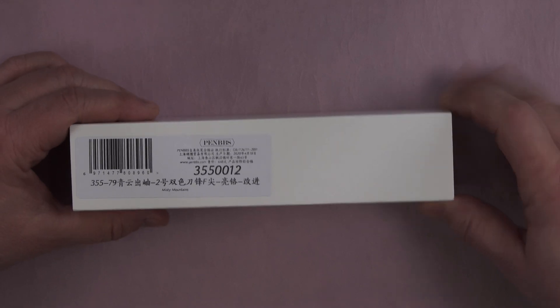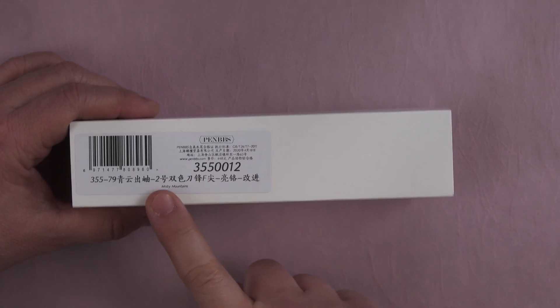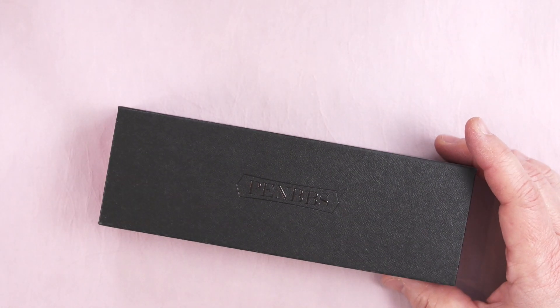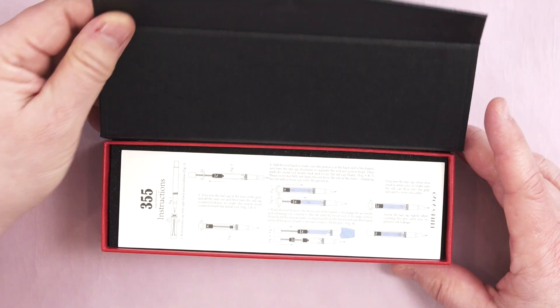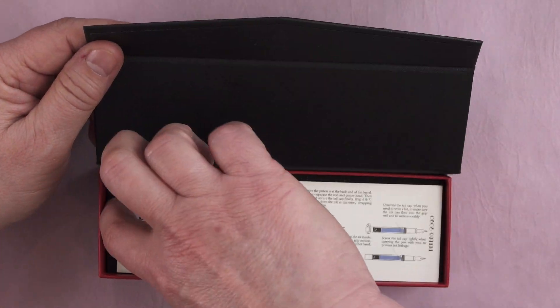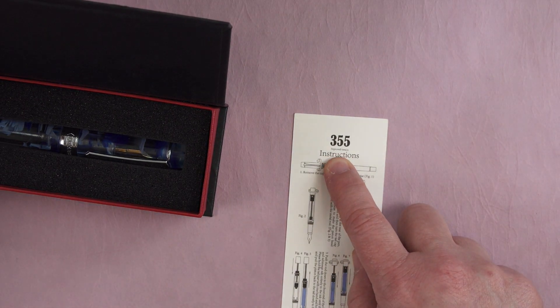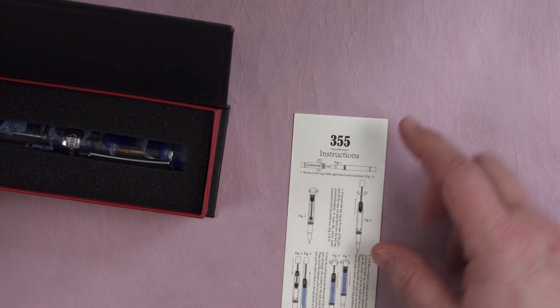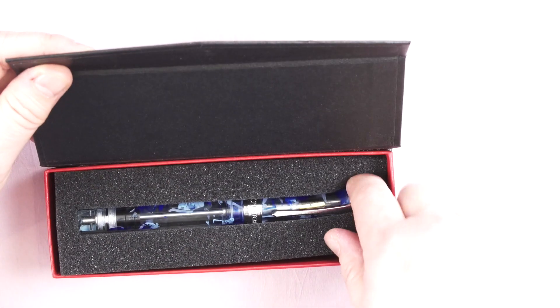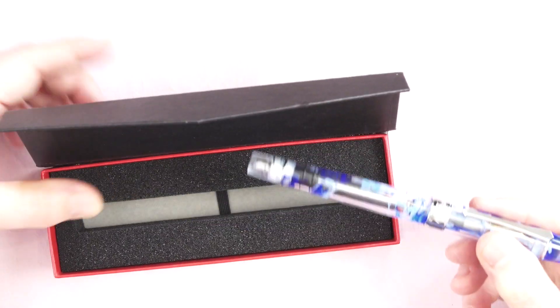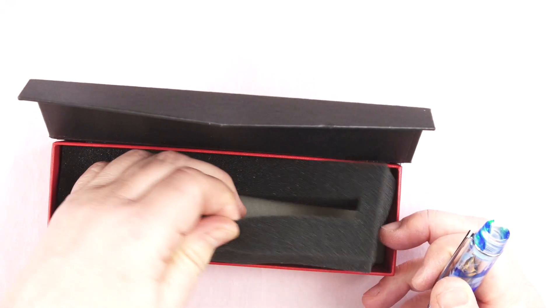The box comes in the standard PenBBS white sleeve with 355 on it. I got the Misty Mountain and then the box is its standard black box with PenBBS on the top. Inside there's an instruction card that says 355 instructions, improved version, in both English and Chinese. And as I said, this is the Misty Mountains color. There is no other paperwork or anything else in the box.